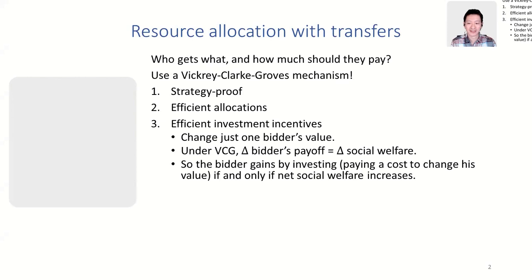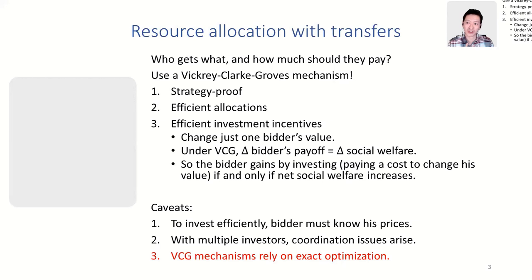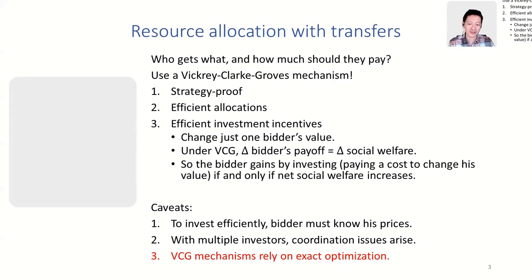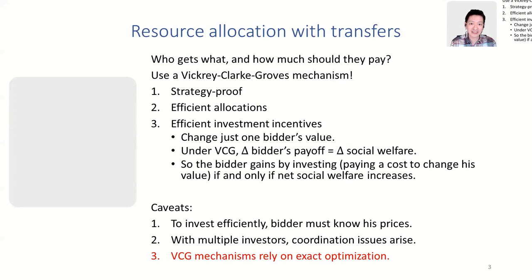This is a useful property, but there are several caveats. The first caveat is that this is really a full-information story. To invest efficiently, the bidder has to know his price. In a second-price auction, an investment only useful if you win might be ex-post suboptimal. The second issue is that with multiple simultaneous investors, investments can become strategic complements, creating multiple equilibria and coordination problems. But the caveat I really want to focus on is that VCG mechanisms rely on exact optimization by the auctioneer.